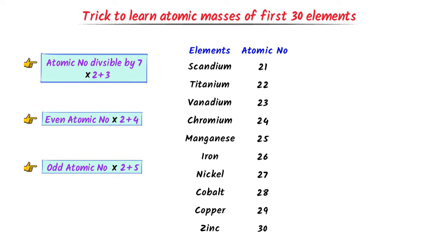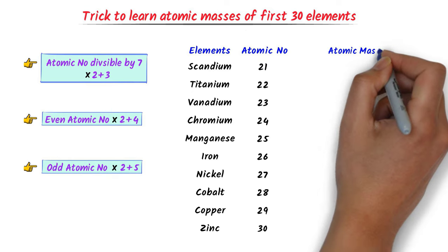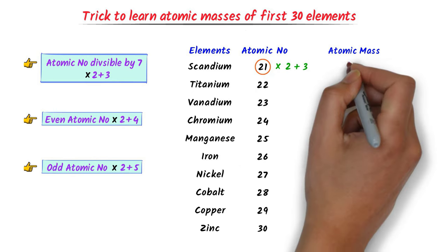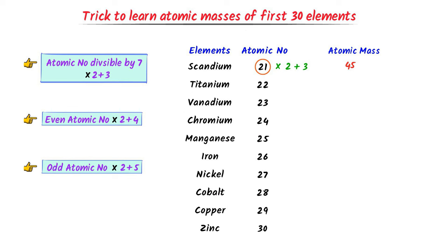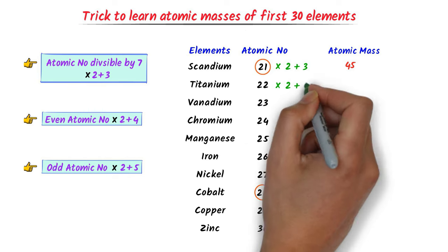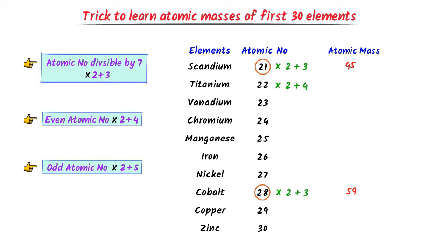The atomic number of scandium is 21 and it is divisible by 7, so I multiply it by 2 and add 3 to it. I get 45. The atomic number of nickel is 28 and it is also divisible by 7, so I multiply it by 2 and add 3 to it. I get 58. The atomic number of titanium is 22 and it is even, so I multiply 22 by 2 and add 4 to it. I get 48.